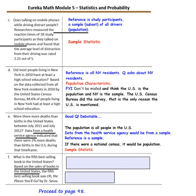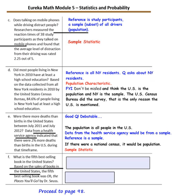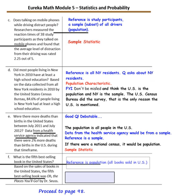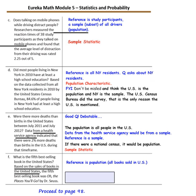Question F: 'What is the fifth best-selling book in the United States?' Based on all book sales in the United States, the fifth best-selling book was 'Oh, the Places You'll Go' by Dr. Seuss. The reference is all books sold in the United States — the population. So this is a population characteristic.